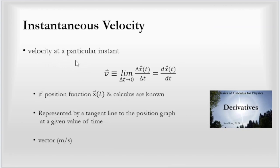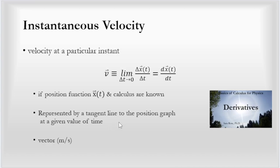When we look at velocity at a particular instant, we take the limit of the differential of the position function. The function uses time as an input variable, and we take the differential with respect to time of that position function. The derivative is represented by a tangent line to the position graph at a given value of time — that's what makes it instantaneous. At each different point on a curvy graph, the tangent line has a different slope.